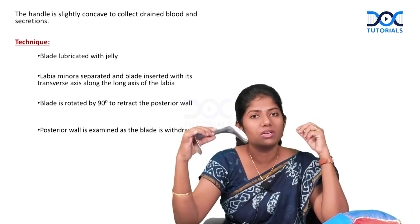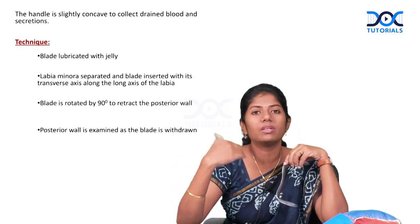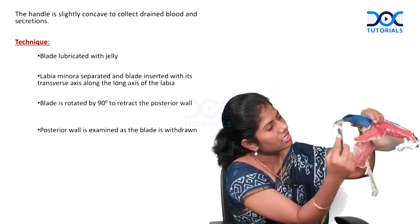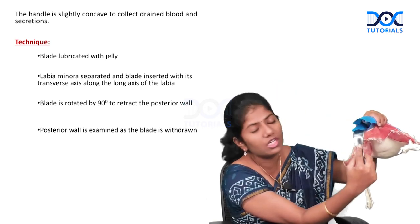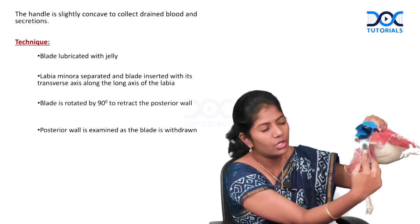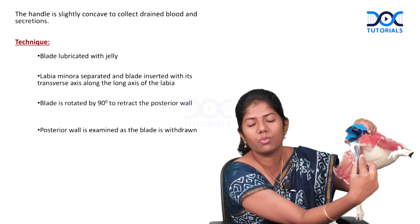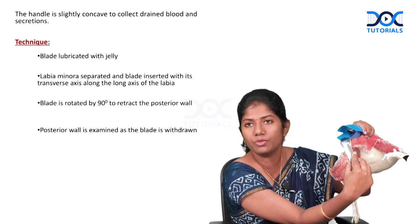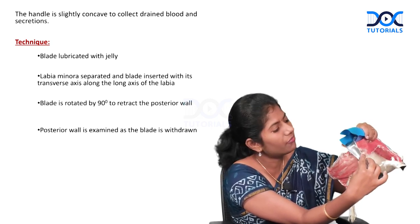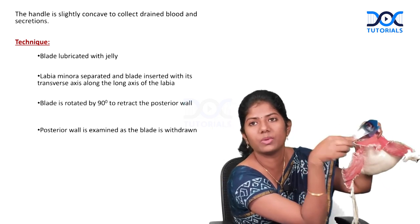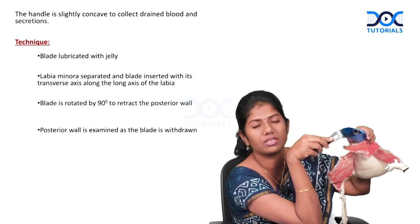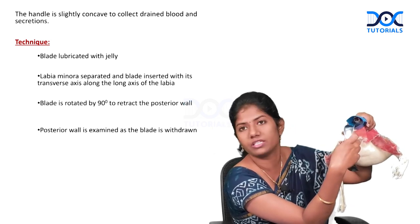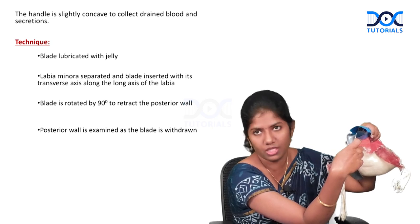The advantage of this speculum is that once inserted it does not hide the entire vagina. It retracts the posterior vaginal wall while you can still see the anterior vaginal wall, part of the posterior vaginal wall, and freely move the speculum to see all parts of the vagina — you will not miss any portion. This speculum can therefore be used to inspect both the vagina and the cervix.